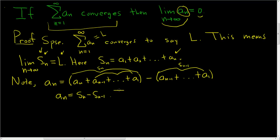So if we take the limit, then if we take the limit as n approaches infinity of a sub n, that's equal to the limit as n approaches infinity of S sub n minus S sub n minus 1. And this is equal to, well, this converges to L and this converges to L. So you just get L minus L, which is equal to 0.